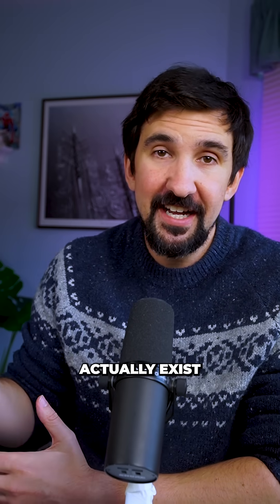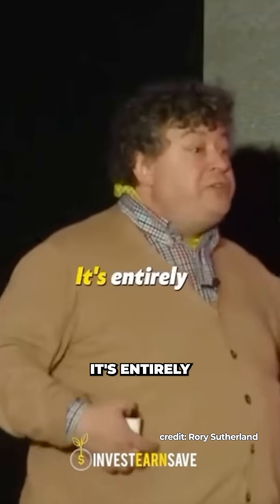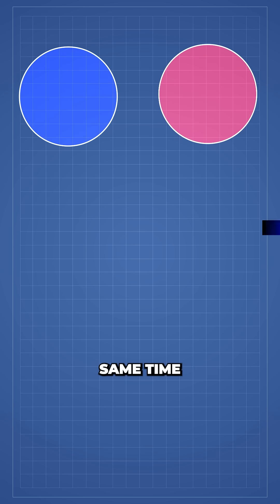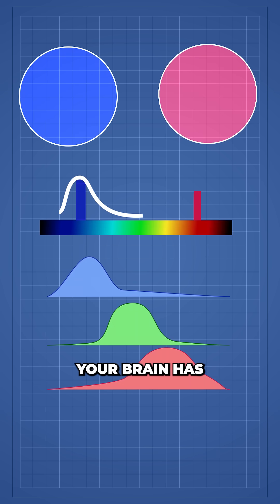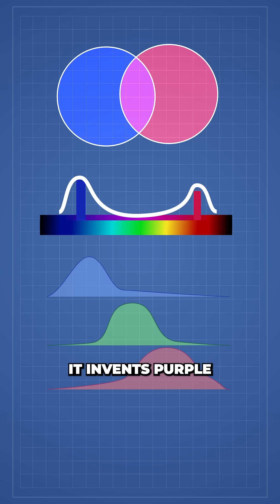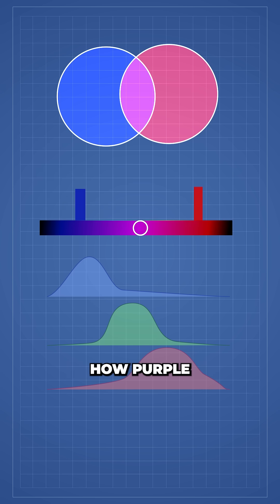However, purple is weird and it doesn't actually exist in the real world. It's entirely a psychological creation. When you see blue and red light at the same time, but no green light, your brain has to get creative. It invents purple and decides how purple based on the ratios of the amounts of red and blue light.